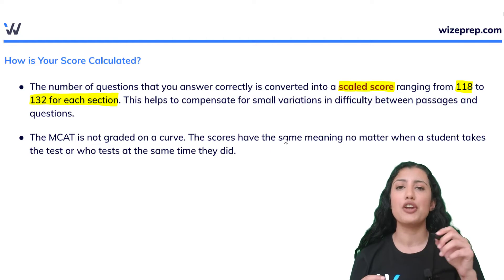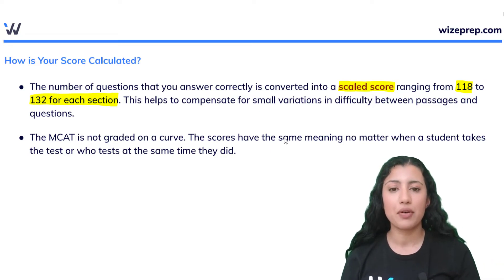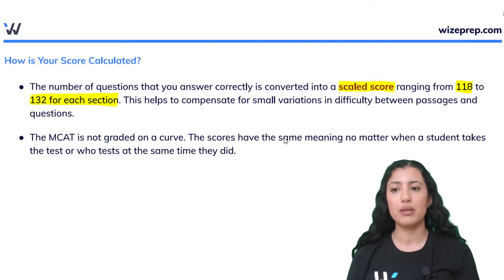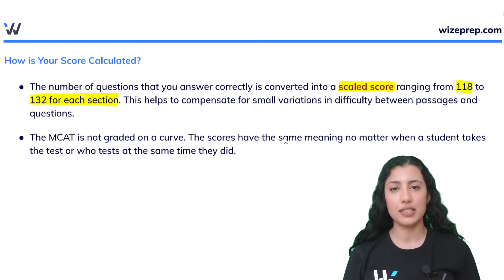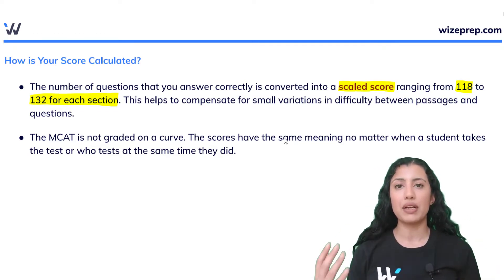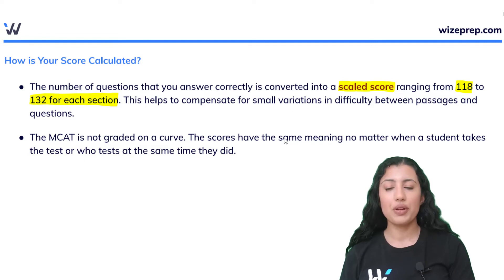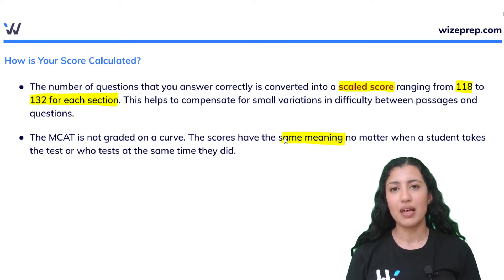Essentially, it creates a normal distribution, which helps to compensate for any variations in difficulty between passages and questions. This makes it more fair and makes it a lot easier to see how one person did in comparison to the rest of the people writing the MCAT. The scores will have the same meaning no matter when a student takes the test or who tests at the same time they did.